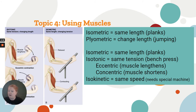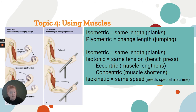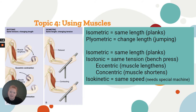Isotonic is where you have some weight on you, just like with isometric, but the muscles are lengthening and shortening — doing an arm curl or a regular push-up. There are two parts: the eccentric, which is the muscle lengthening, and the concentric, which is the muscle shortening — think concentric, contract, get shorter. Isokinetic means same speed and requires special machinery — we don't need to be super familiar with that one.